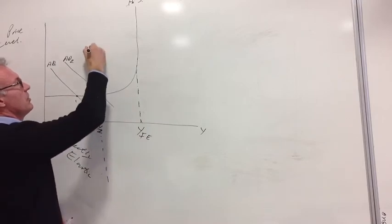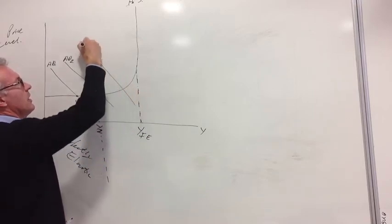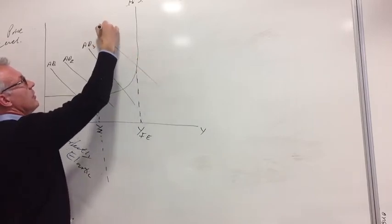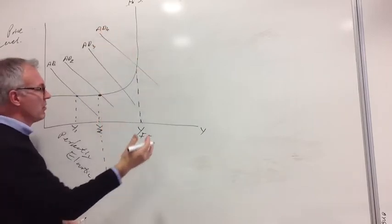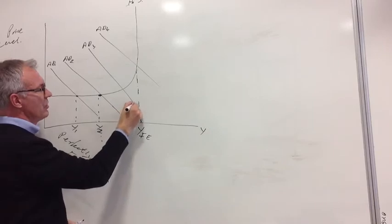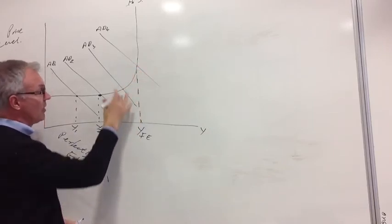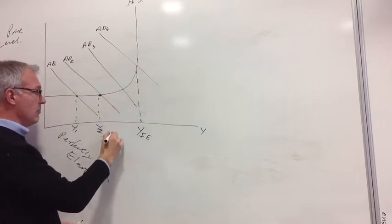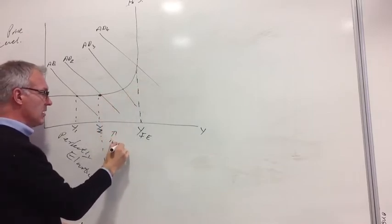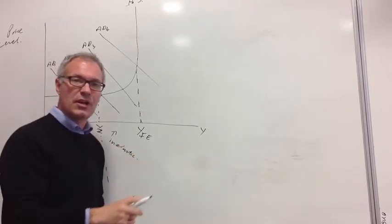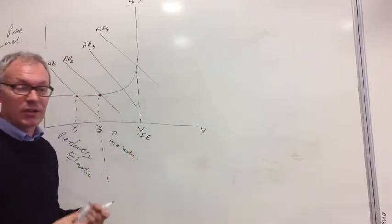If aggregate demand increases, say to AD3 and then to AD4, what's going to happen as a trade-off is inflation is going to begin to increase, because this aggregate supply line becomes increasingly inelastic. And the reason for this is shortages, problem X, will occur in the economy.